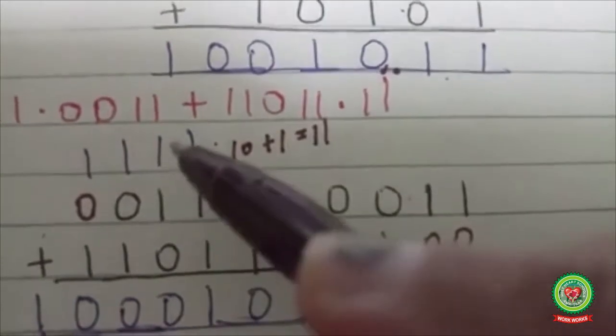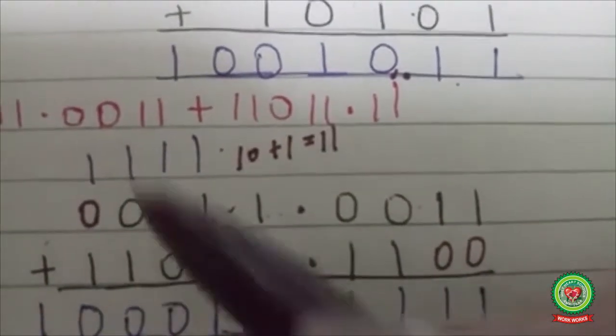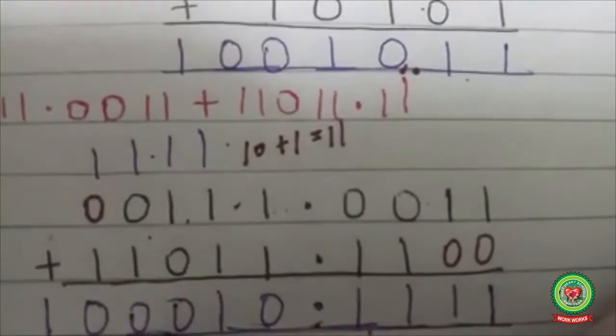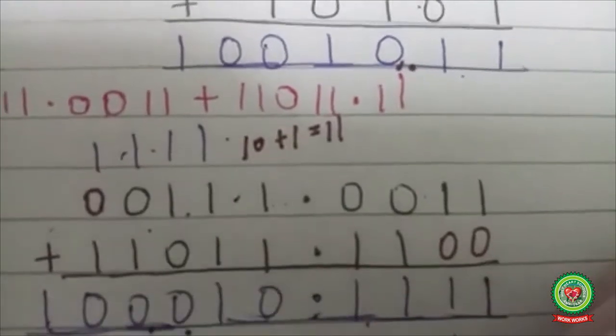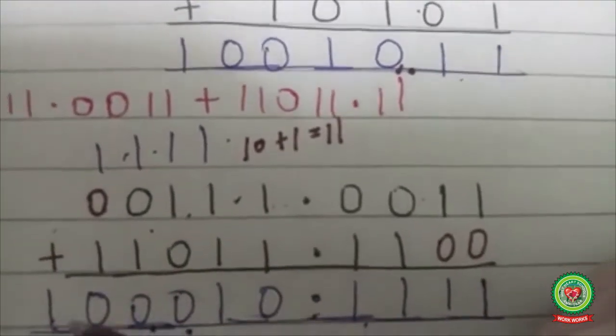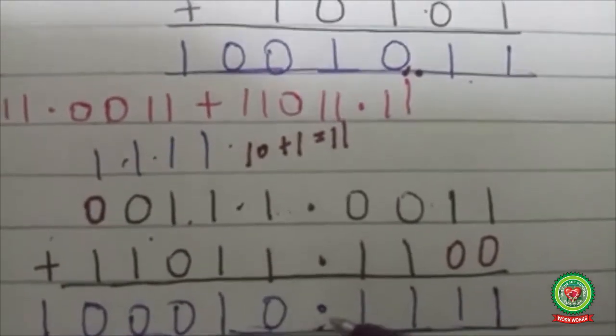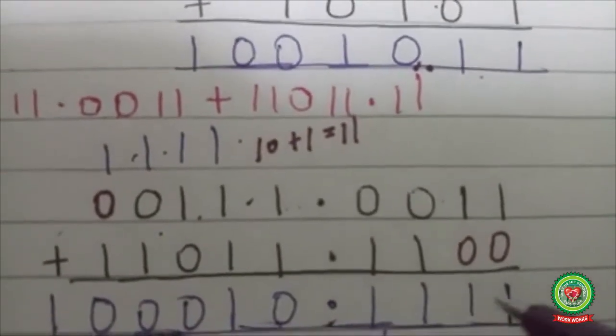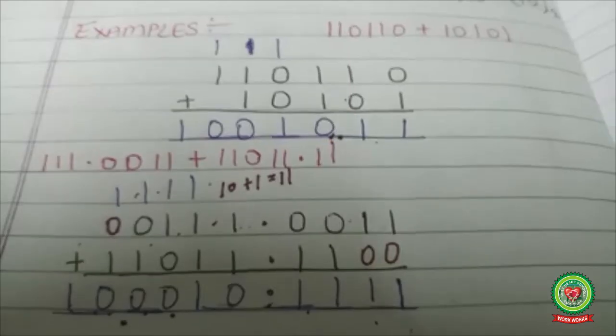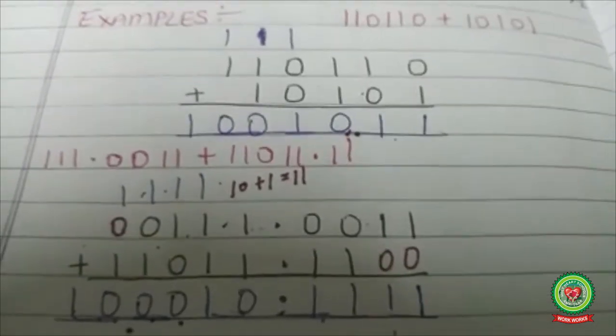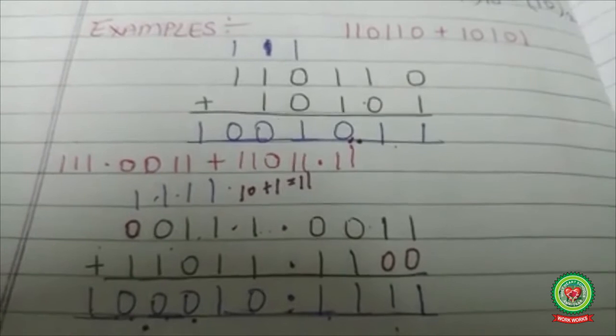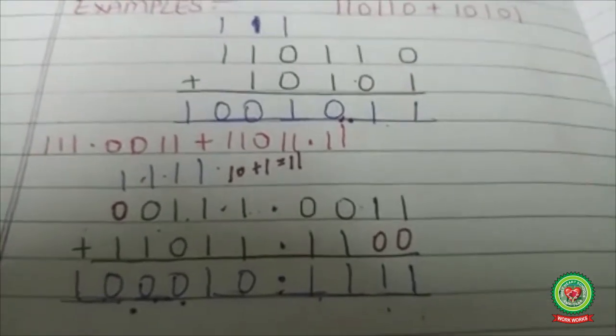Similarly, continuing with 1 plus 1 equals 10 for the remaining digits, the answer is 100010.1111. In this way, fractional addition of binary numbers is performed.